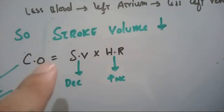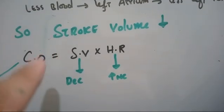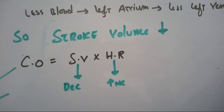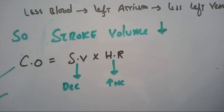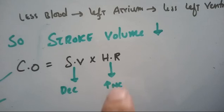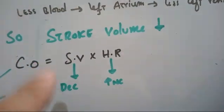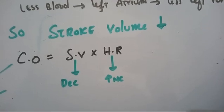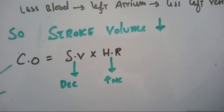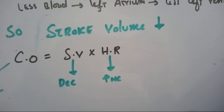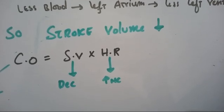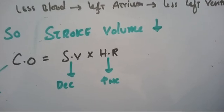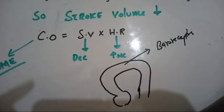Stroke volume decreases during inspiration. We know that cardiac output equals stroke volume multiplied by heart rate. If stroke volume is decreasing but cardiac output does not change much, then to compensate, the heart rate increases. The heart rate increases because of decreased stroke volume, to maintain the same cardiac output.